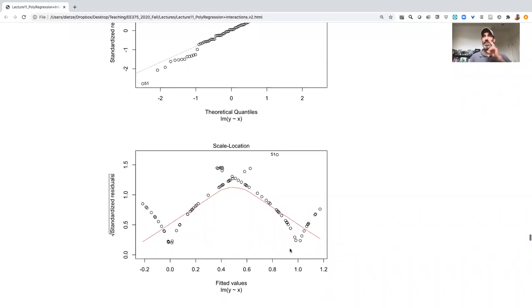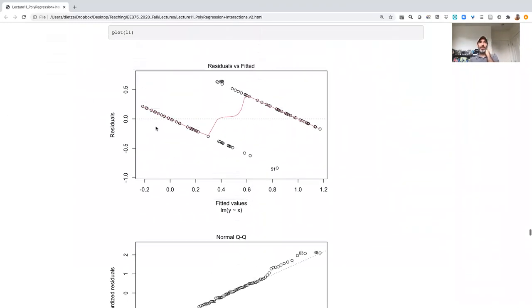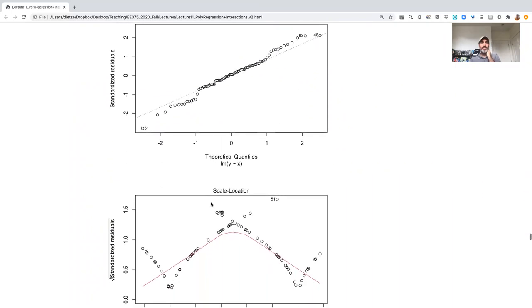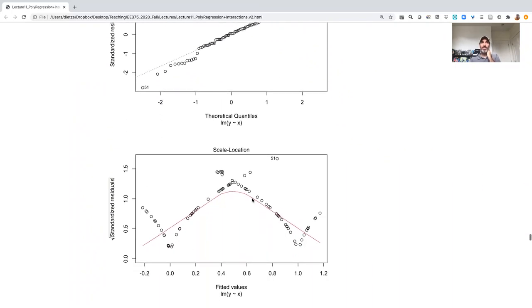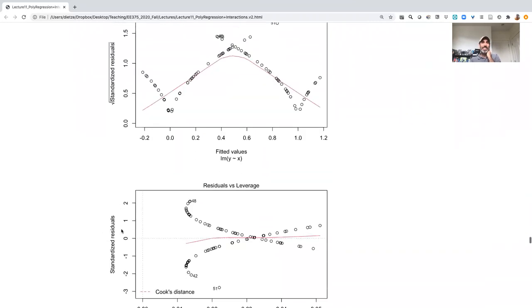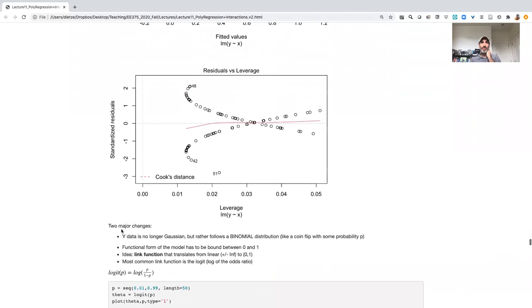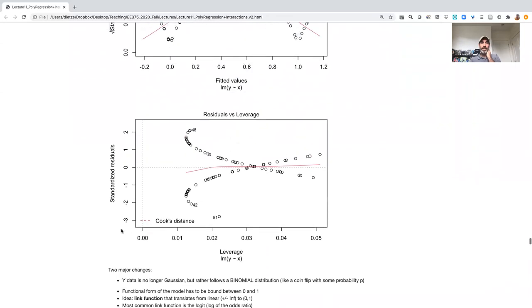We have this kind of giant W shape corresponding to taking these two options, zero and one, taking their absolute value and taking their square root, which adds that curvature. But clearly variance is not constant. And again, leverage is kind of crazy.